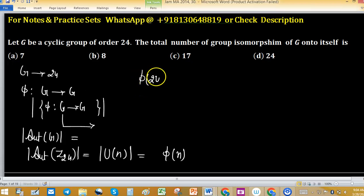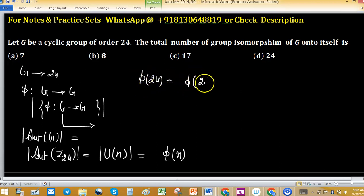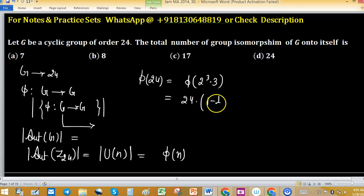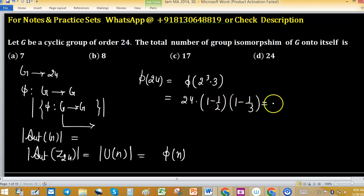We write 24 as 2³ × 3. Then φ(24) = 24 × (1 − 1/2) × (1 − 1/3) = 8.